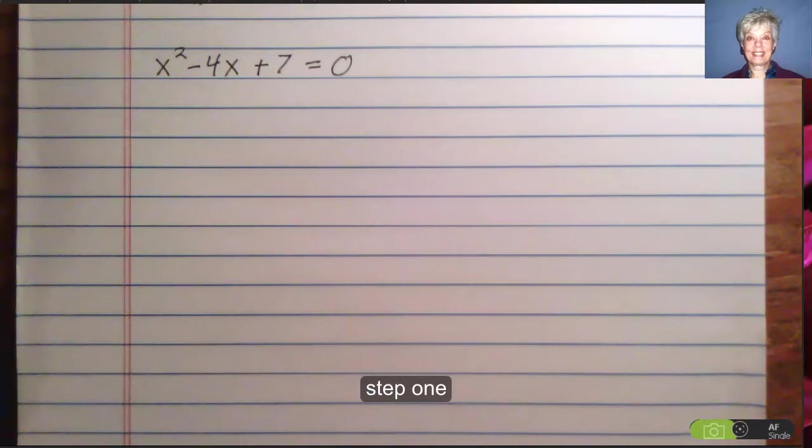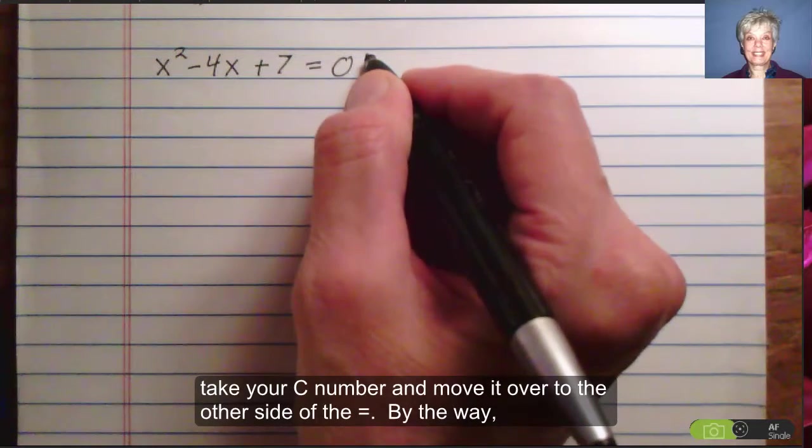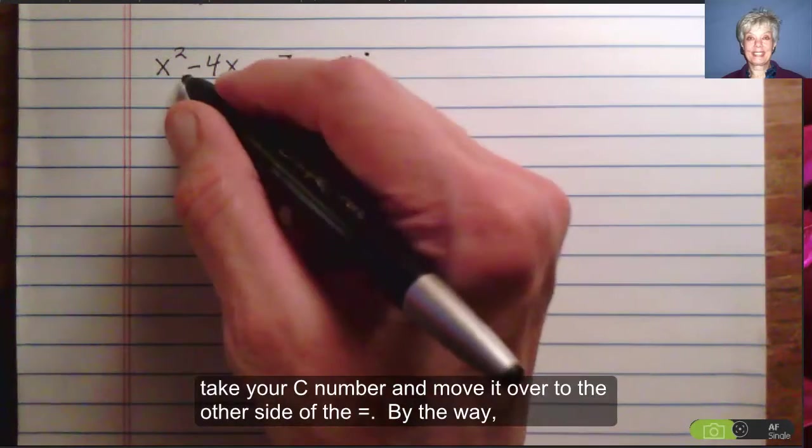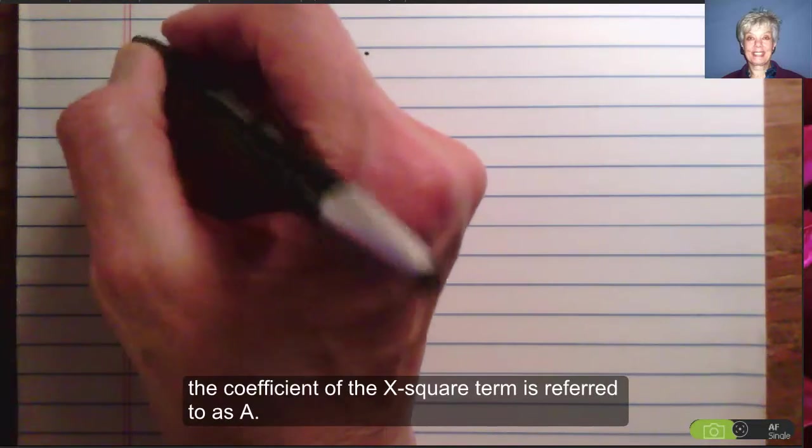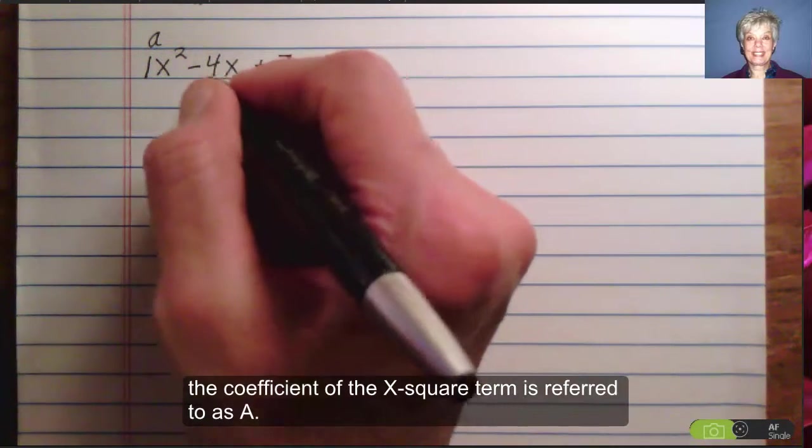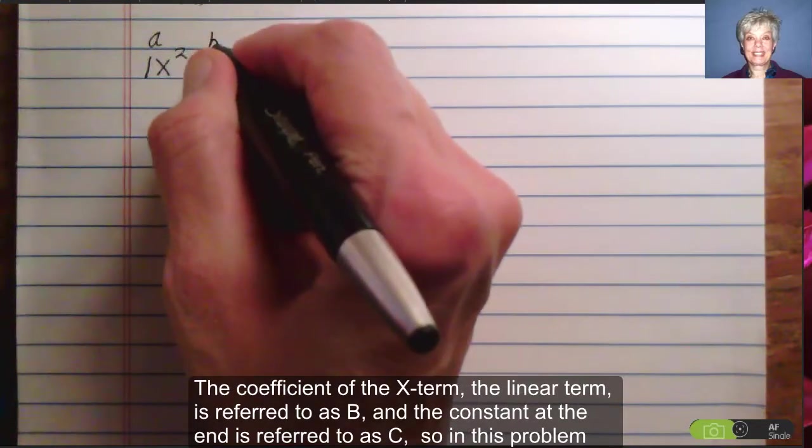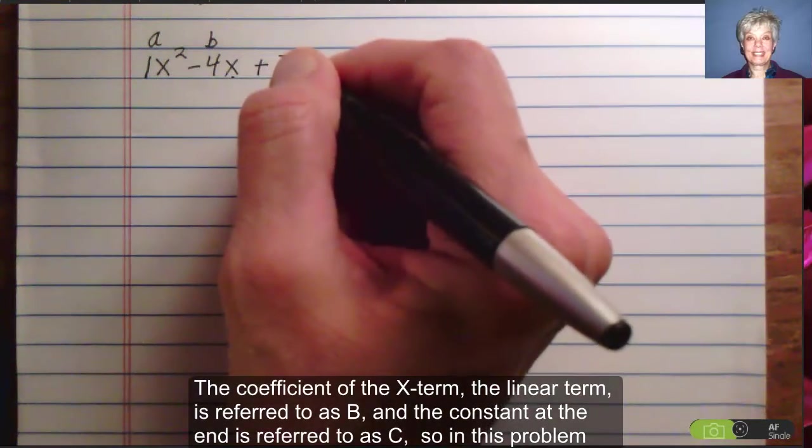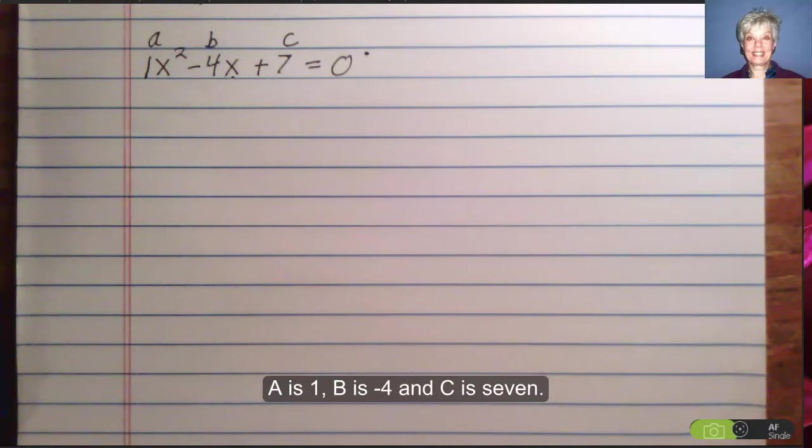Step 1: take your c number and move it over to the other side of the equal sign. By the way, the coefficient of the x squared term is referred to as a, the coefficient of the x term, the linear term, is referred to as b, and the constant at the end is referred to as c. So in this problem a is 1, b is negative 4, and c is 7.